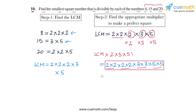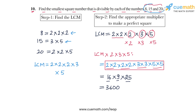Let's find the numerical value. 2 × 2 = 4, 4 × 2 = 8, 8 × 2 = 16. Then 3 × 3 = 9, and 5 × 5 = 25. So 16 × 9 = 144, and 144 × 25 = 3600. The smallest number divisible by each of 8, 15, and 20 and which is also a perfect square is 3600. This is the answer for question number 10.